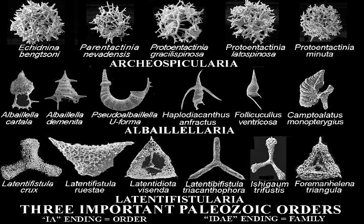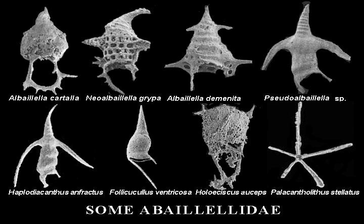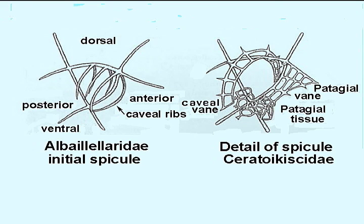Archaeospicularians occur only in the early Paleozoic. The Albailellarians appear in latest Ordovician times, but the four Albailellarian families with bilaterally symmetrical cells evolved only during the later Paleozoic. All have an initial spicule with axial ribs.